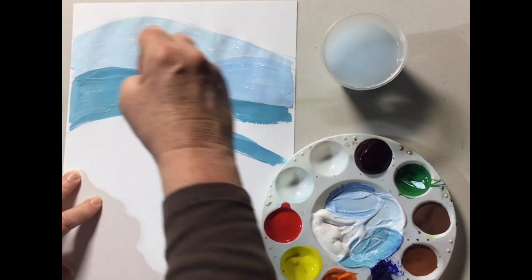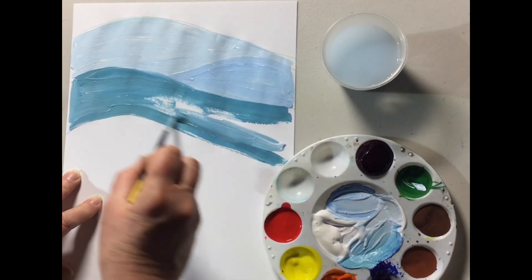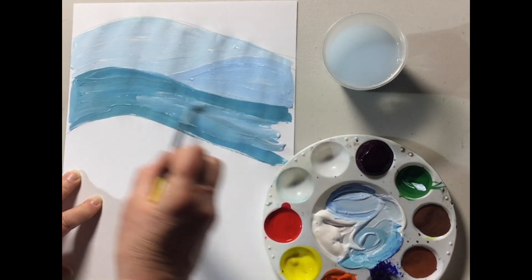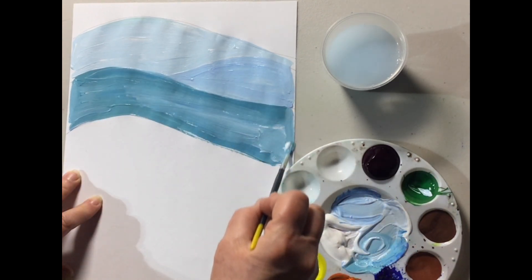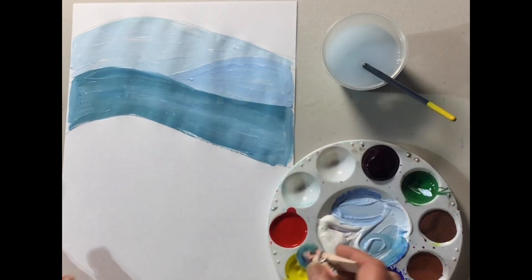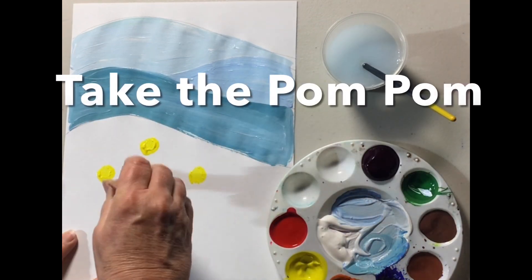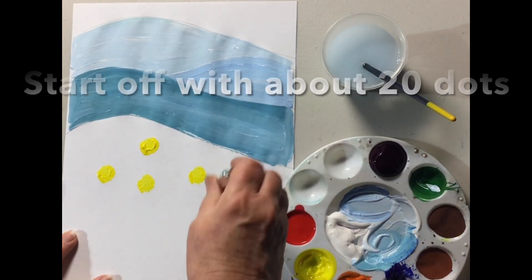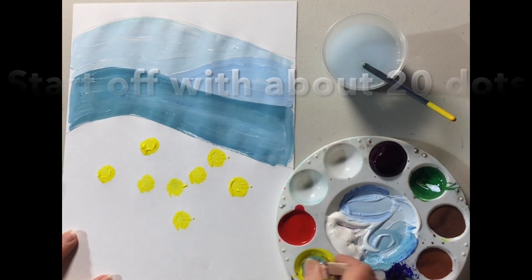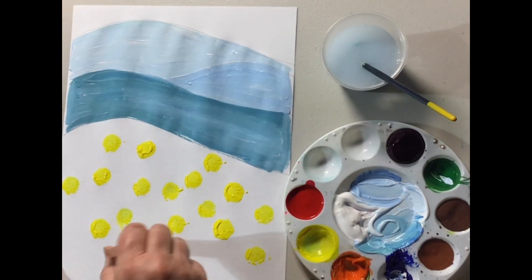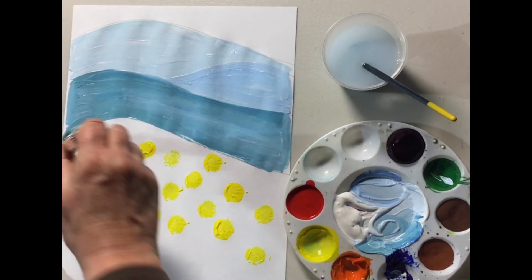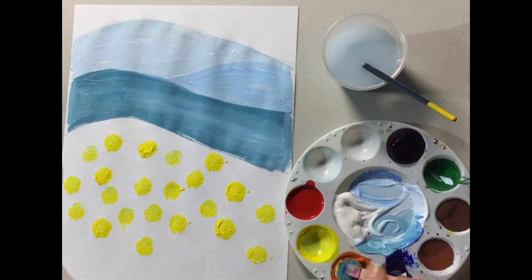This is the background, so the background in this landscape is cool colors. Really clean your brush. Put it in the water. What is this? It's a clothespin. I have yellow and I'm stamping about 20 yellow with a pom-pom.